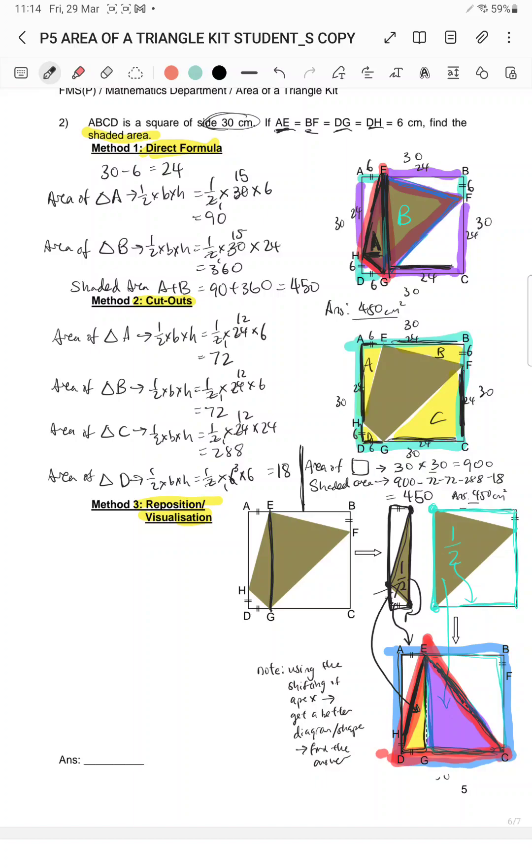Okay, so in short this method of reposition and visualization supposed to cut down a lot of the various steps for direct formula or for cutouts. So area of the shaded area is half times base times height, which is equals to half times this base which is 30 and this height which is also 30. 15 times 30, that will be 450. And that's the answer. One step.